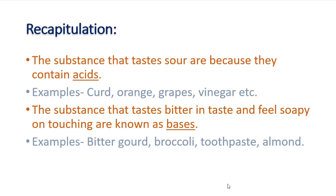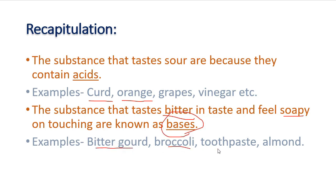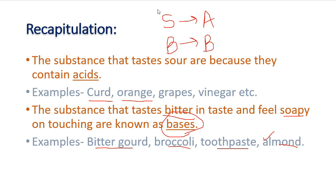Today we learnt about acids and bases. Let us sum up: substances that taste sour contain acids — for example, curd, orange, grapes, vinegar, etc. Substances that taste bitter and feel soapy on touching contain bases — for example, bitter gourd, broccoli, toothpaste, almond, etc. So sour food items contain acids and bitter food items contain bases.